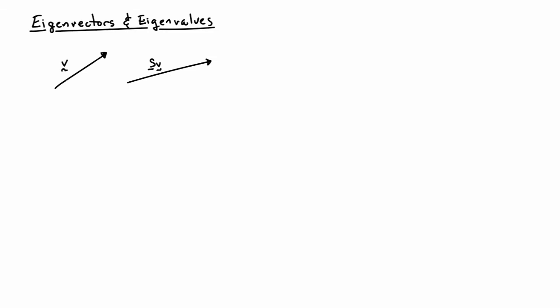If I apply a tensor to it, it will in general change its length and also change its orientation. In particular, it will no longer be parallel to v. But there are special vectors v that will, after application of s, still be parallel to the original vector. Those are called eigenvectors.